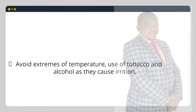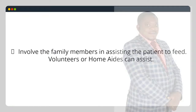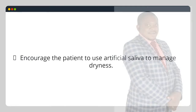Weigh the patient at least twice each week to monitor for weight loss. Involve family members in assisting the patient to feed; volunteers or home aides can assist. Encourage the patient to use artificial saliva to manage dryness.